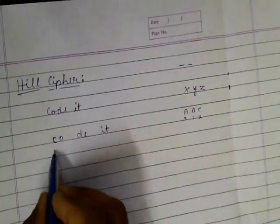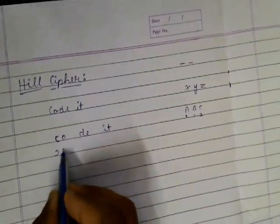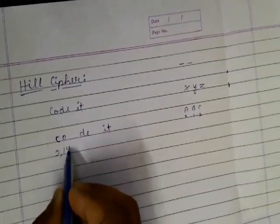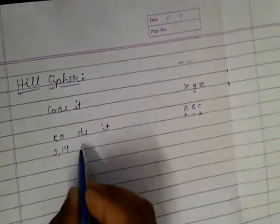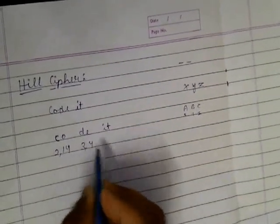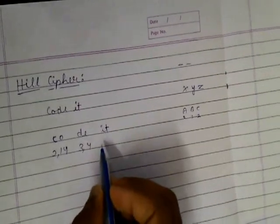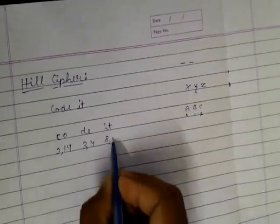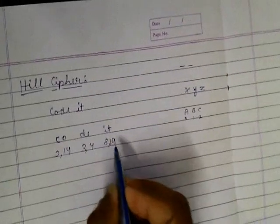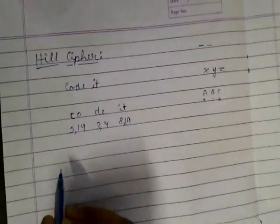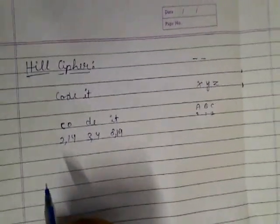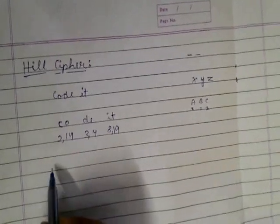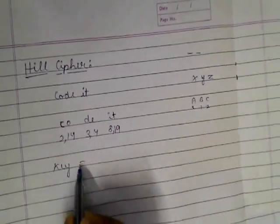Similarly for D and E: 3 and 4. And for I and T: I is 8 and T is 19.